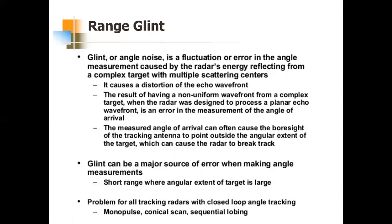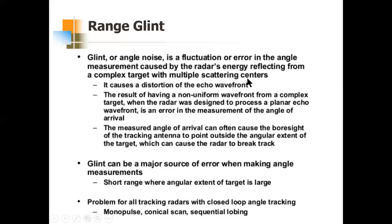Now apart from split gate tracking, we have something called range glint. First, let us understand what glint is. Glint is also called angle noise — it affects all tracking radars, especially those tracking targets at short range. Other names for glint include target noise, angle fluctuations, and angle scintillations. Glint occurs with complex targets that have more than one scattering center — that is, multiple scattering centers.